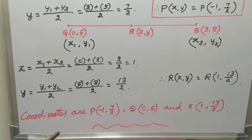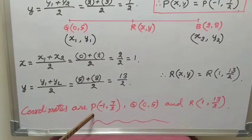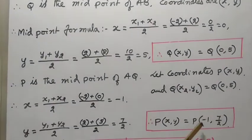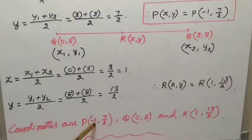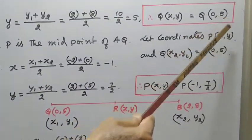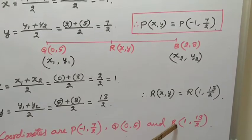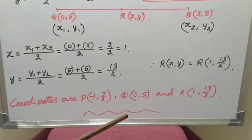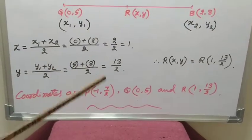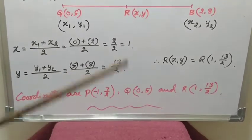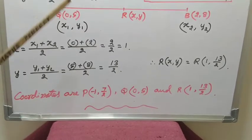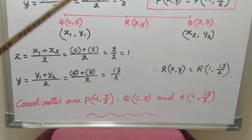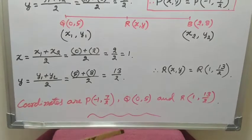Therefore we calculated all the coordinates of points P, Q, R. P coordinates are (-1, 7/2), Q coordinates are (0, 5), and R coordinates are (1, 13/2). These are the coordinates dividing line segment AB into 4 equal parts. Dear students, particularly in coordinate geometry, this year onwards they are giving more questions on 3-marks problems. This is a very important problem for 3-marks questions. So learn either the trisection problem or the divided into 4 equal parts problem — they will certainly give one of these.